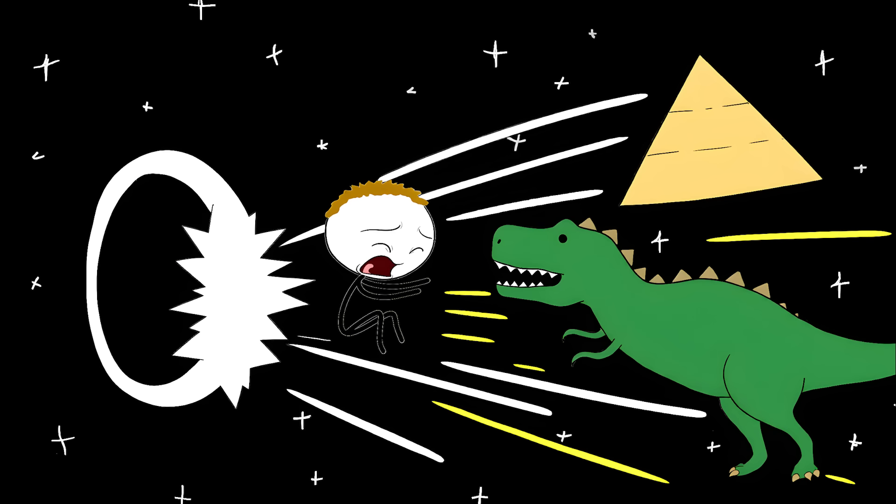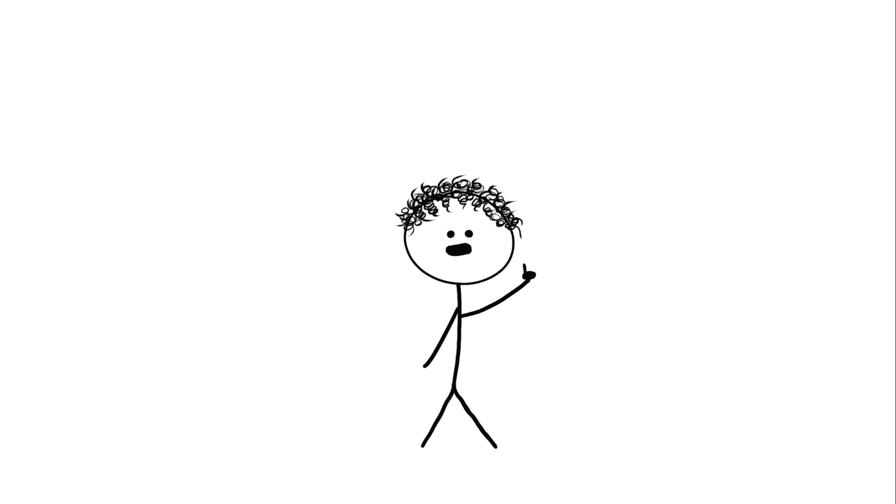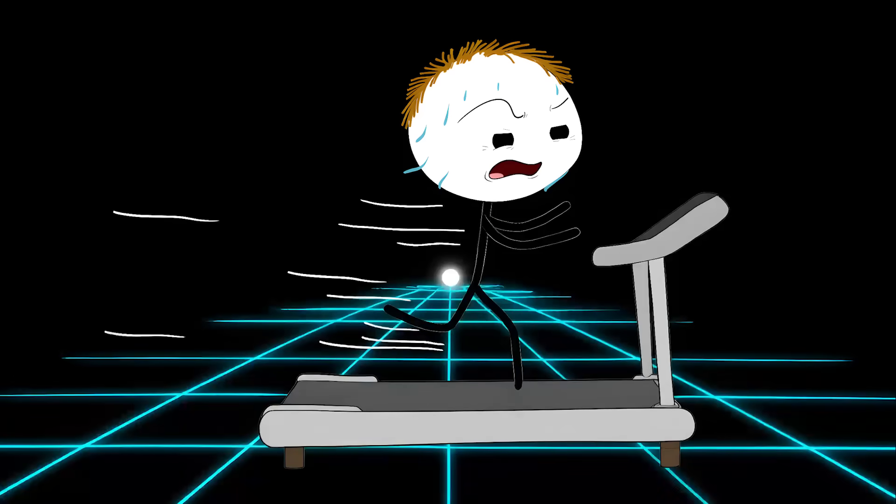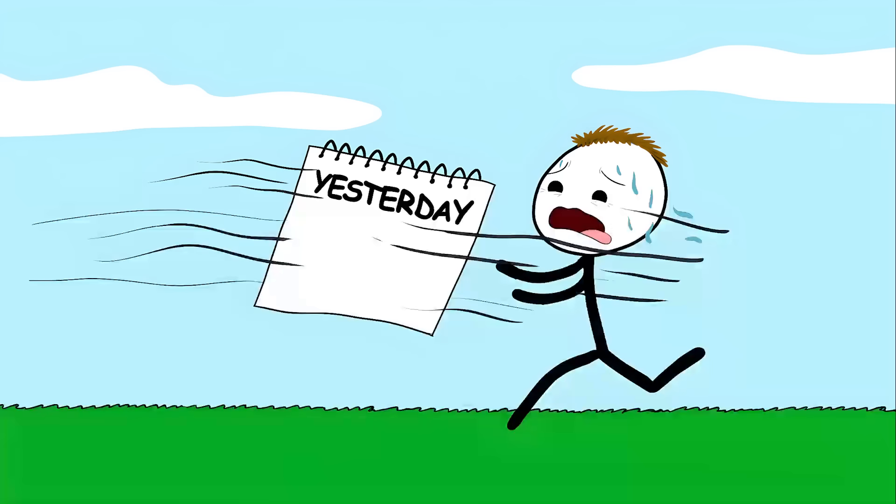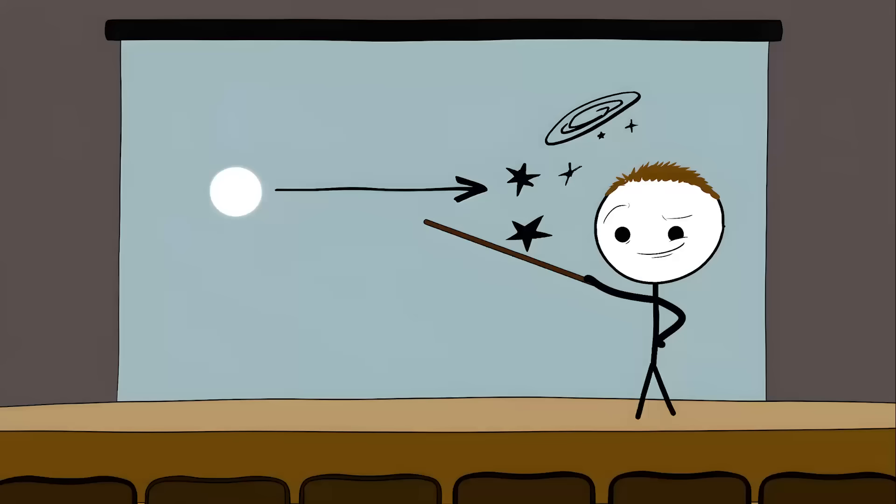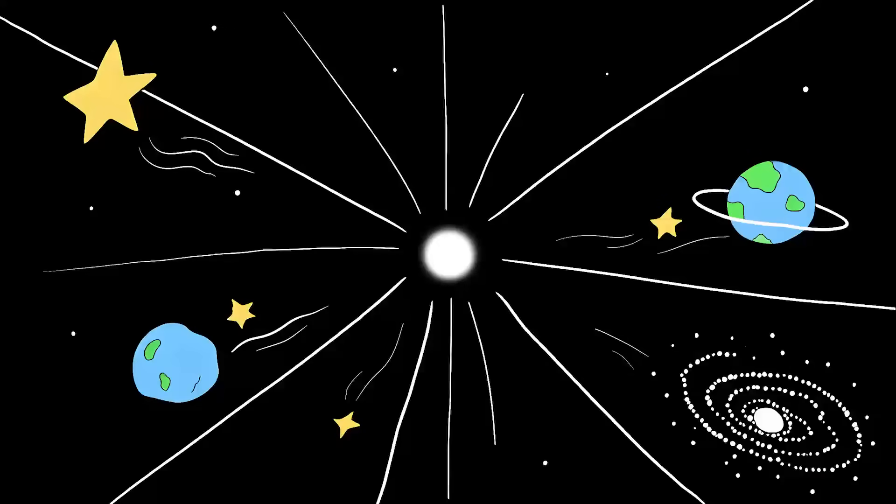But you could never reach a white hole. Not because it's too far away, but because the mathematics say it's impossible. It's like trying to catch up to yesterday. Some scientists think the Big Bang was actually a white hole, an explosion of matter and energy from a single point, creating everything we see around us. We might all be living in the aftermath of the universe's biggest reverse event.